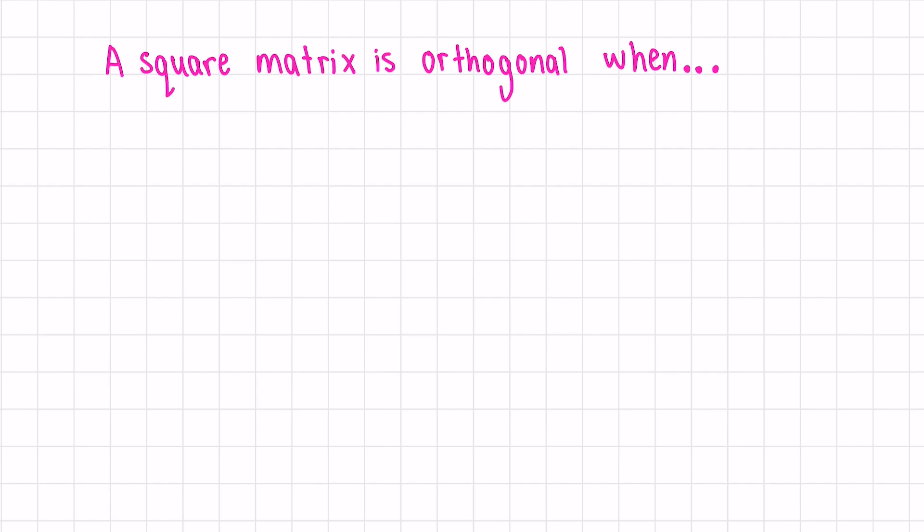Our next topic is orthogonal diagonalization, but first let's talk about when a square matrix is orthogonal. It needs to satisfy one of the three conditions, so you only need to check one of them, but they all imply each other. Let's call this matrix P, so P is invertible.